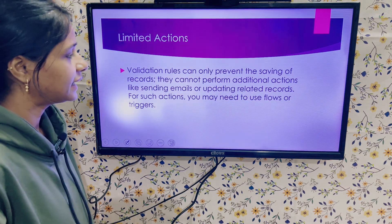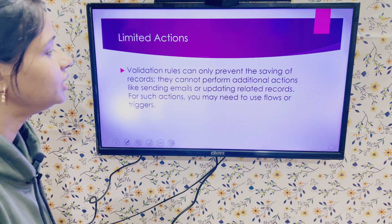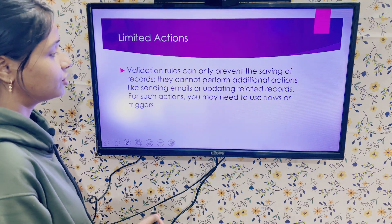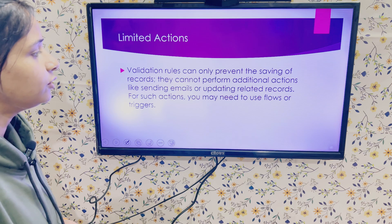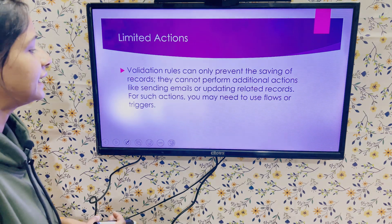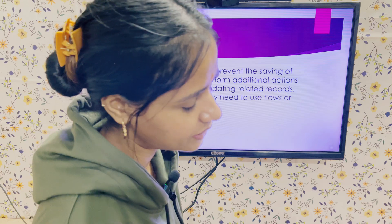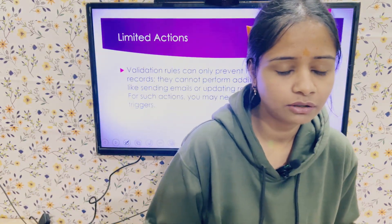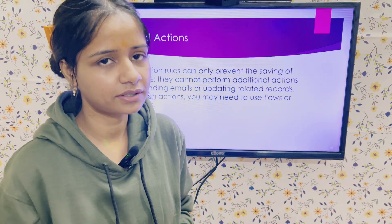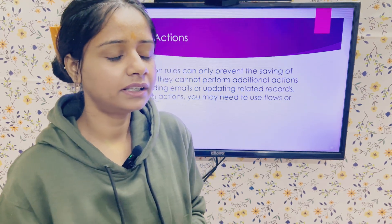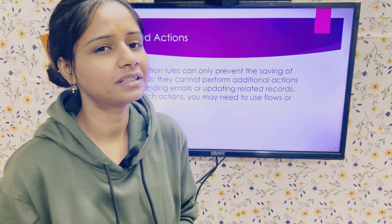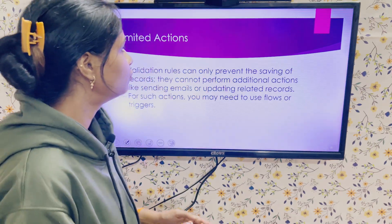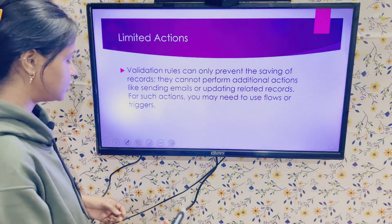Next comes limited actions. Validation rules can only prevent the saving or updating of records — they cannot perform additional actions like sending emails or updating related records. Using validation rules we can only prevent a user from inserting or updating a record if conditions are not satisfied. For scenarios like sending emails or avoiding insertion of related records, we need automation tools.